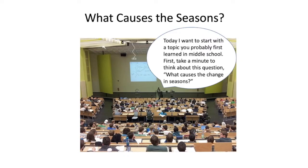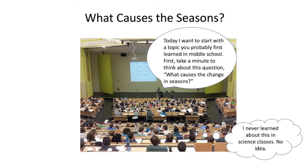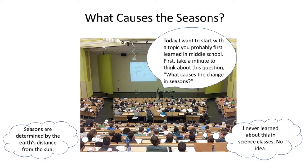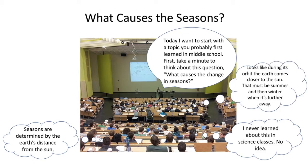In this classroom scene, the teacher introduces a new topic and asks the class to think about the causes of seasonal change. One student has never learned about the topic and has no prior knowledge. Another student has a misconception that seasons are determined by the changes in the distance of the earth to the Sun. A third student looks at a figure in the text and infers that seasonal change is based on the distance between the earth and the Sun.